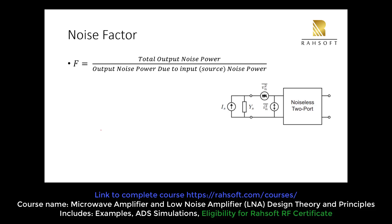Let's continue with the noise factor expression. F is equal to total output noise power over output noise power due to the input — meaning the source. So it means the power which is related to or coming from YS, the impedance of the source.